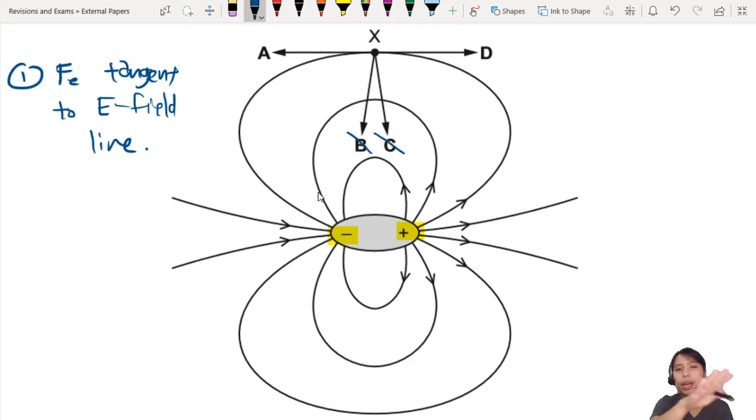So A and D are possible, either one. Number two: the second thing you must remember is that the electric field direction, you know the arrows on the electric field...